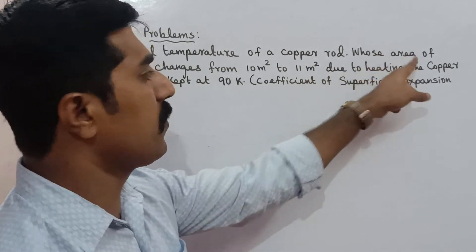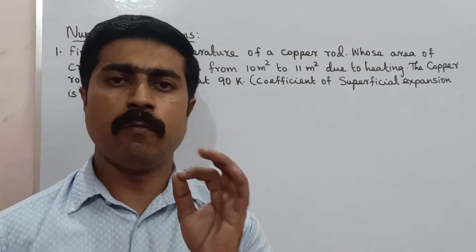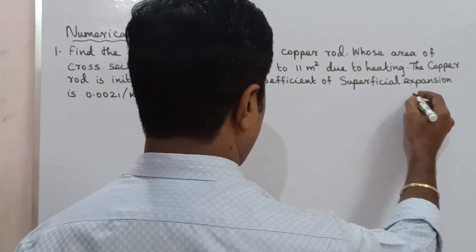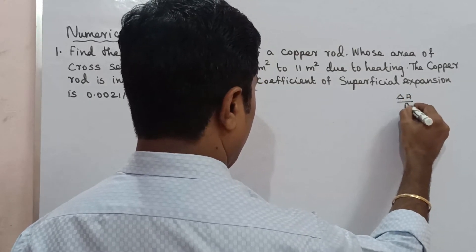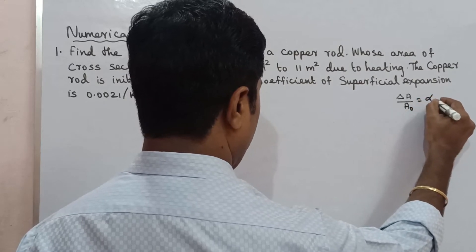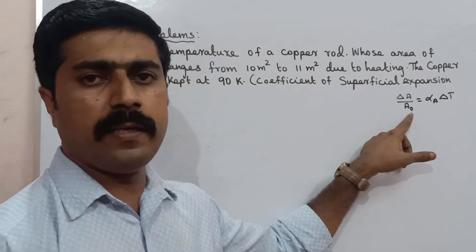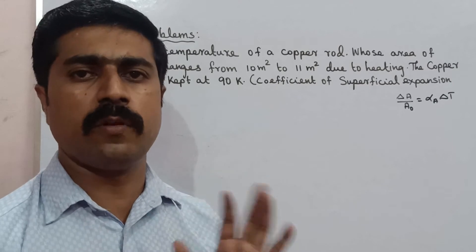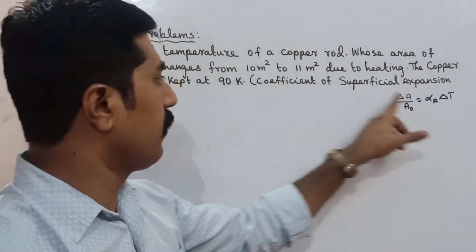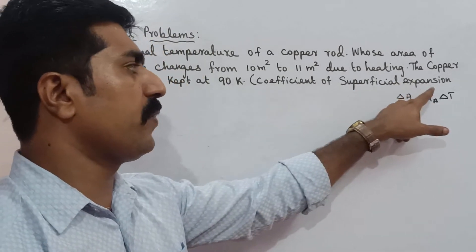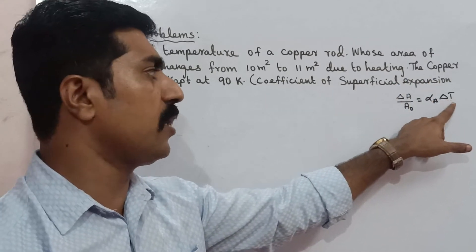So this is the area that changes. In the area and superficial expansion, we will look at the formula. The formula is: Delta A divided by A0 is equal to alpha-A into delta-T. Here, A0 is the initial area, delta-A is the change in area, alpha-A is the coefficient of superficial expansion, and delta-T is the change in temperature.